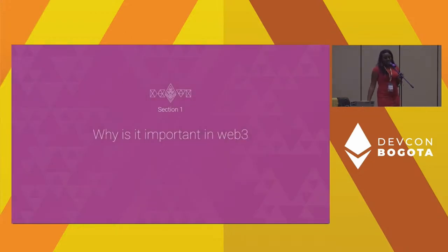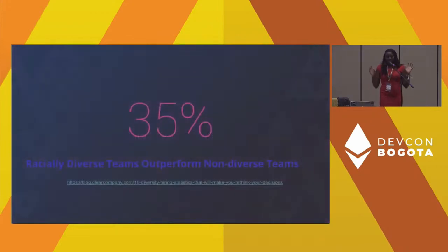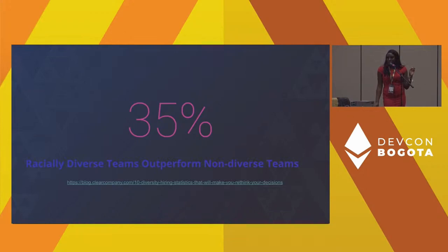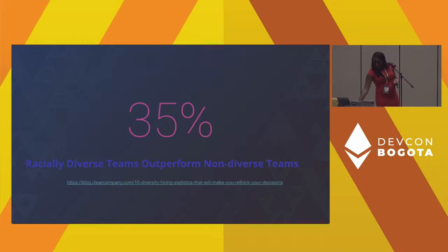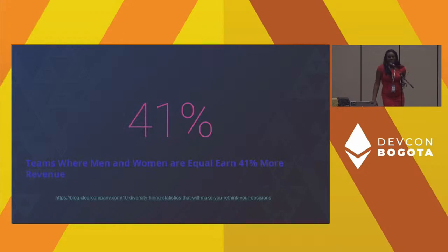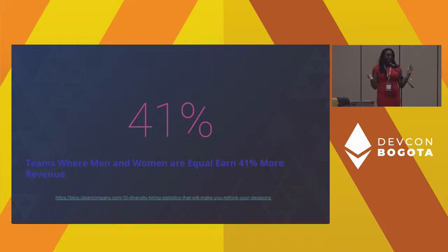So why is D&I important in Web3? Racially diverse teams perform 35% better than non-racially diverse teams — so if you want a better performing team, have diversity on it. Also, teams where women and men earn equally generate 40–41% higher revenue for the organization, so having equally diverse teams from a gender perspective and eliminating a gender pay gap are key steps.